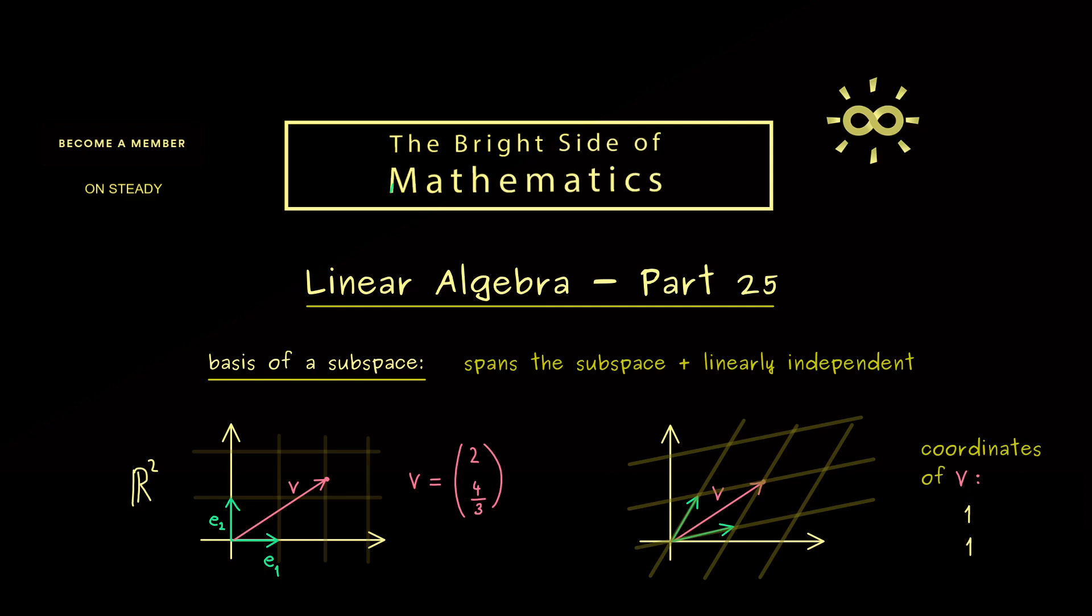And now of course here on the right hand side we could write these two coordinates as a column vector again. This might be a little bit confusing because it's the same vector in the plane just represented by different bases. I show you later how we can avoid confusion there.